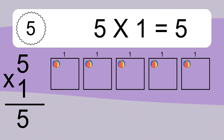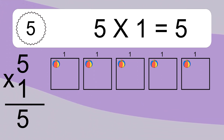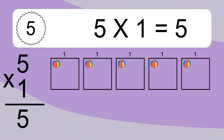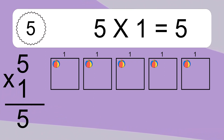We have 5 boxes, and each box has 1 colorful ball inside. If you count all the balls in all the boxes together, you will have 5 times 1 balls. This equals 5 balls.